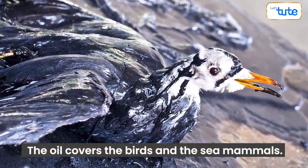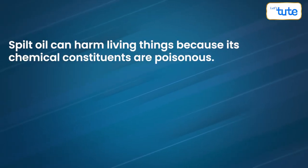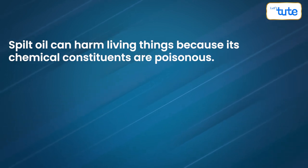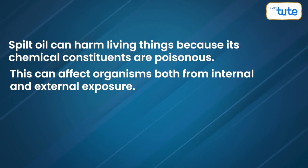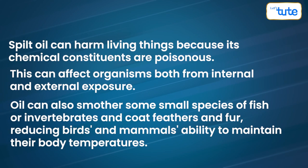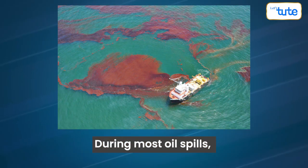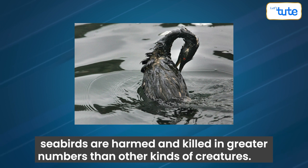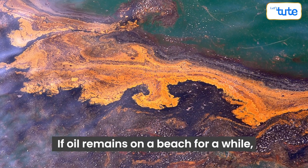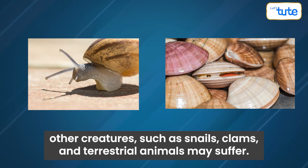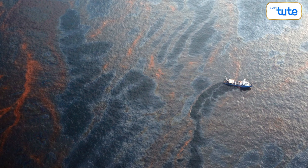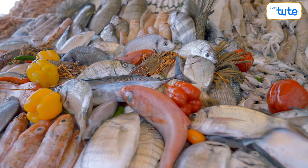Not just the process of photosynthesis, this thick layer of oil also reduces the amount of dissolved oxygen in the ocean. The oil covers birds and sea mammals. Spilled oil can harm living things because its chemical constituents are poisonous, affecting organisms both from internal and external exposure. Oil can also smother small species of fish or invertebrates and coat feathers and fur, reducing birds' and mammals' ability to maintain their body temperatures. During most oil spills, seabirds are harmed and killed in greater numbers than other creatures. If oil remains on a beach for a while, other creatures such as snails, clams, and terrestrial animals may suffer. The oil that spills into the ocean can also have a great impact on the health of people who consume seafood.